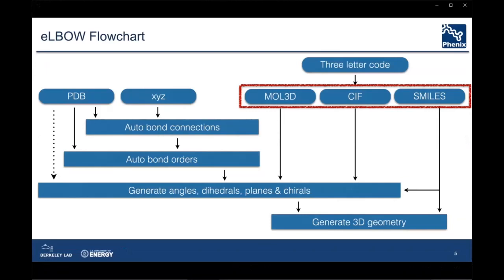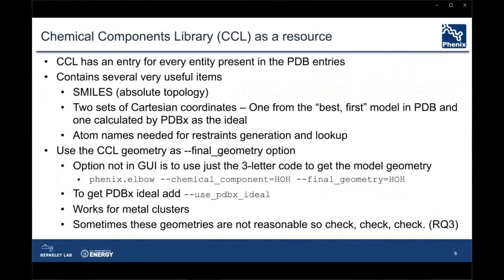The most information-dense is the CIF file from the Chemical Components Library, which we will discuss later. If you have a three-letter code of an entity, you can access the SMILES string, bond information, and atom names via this code. The end result is a 3D geometry and a list of internal coordinates that can be exported as restraints. The Chemical Components Library is a resource provided by the PDB and distributed in Phoenix — there is an entry for every code used in the PDB for a chemical species.